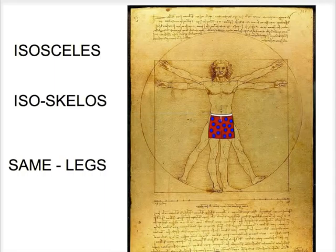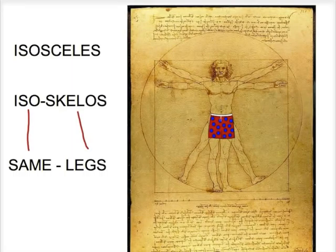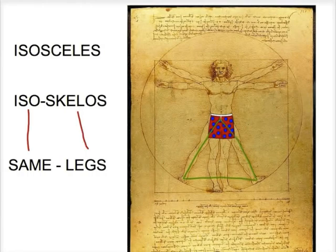Iso means same and skelos means legs. So when we talk about isosceles triangles, we mean the legs are the same, just like these legs in this triangle would be considered the same.